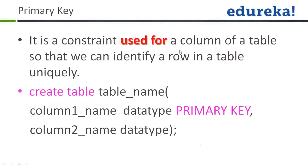Primary key: it is a constraint used for a column of a table so that you can uniquely identify a row in a table. You can just pass the primary key and you know that in that column you won't find any other primary key with the same value, so that is why you can use it to reference your table. When you have to mention a column as primary key, you write 'primary key' after the column name and data type.